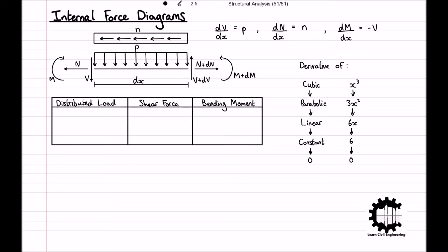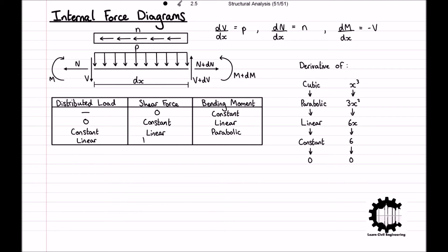Now we can use this to fill in our table. With a shear force of zero, the bending moment will be constant. With a distributed load of zero, the shear force will be constant and the bending moment will be linear. With a constant distributed load, the shear force will be linear and the bending moment will be parabolic. And with a linear distributed load, the shear force will be parabolic and the bending moment will be cubic.